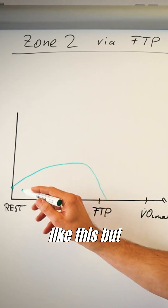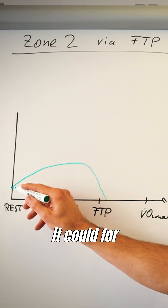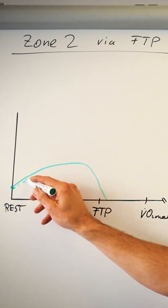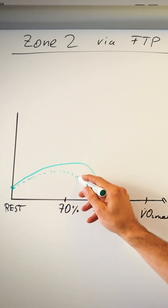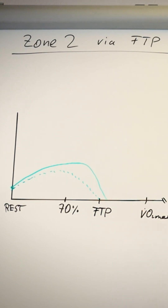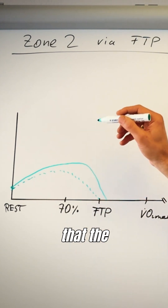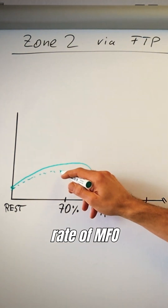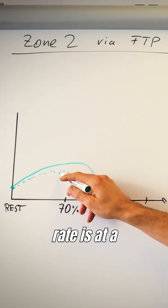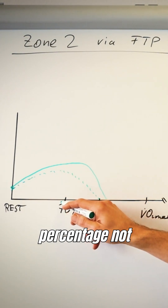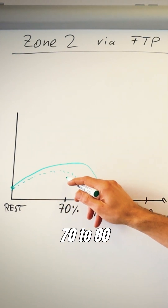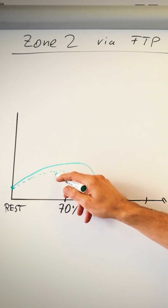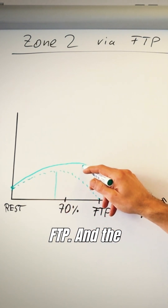Fat combustion is also very individual between two athletes. So the curve could look one way, but it could also look quite different — meaning that the maximum fat oxidation rate is at a lower percentage, not 70 to 80 percent but more like 60 to 70 percent of your FTP.